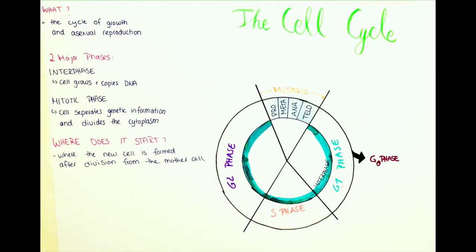Since it's a cycle, it's a little difficult to find where it starts. Usually in the literature it says the cycle starts just when the new cell is formed — so directly after the mitosis, or after the division from the mother cell.